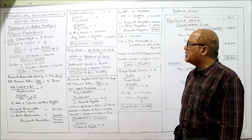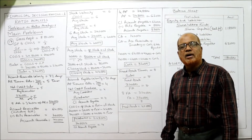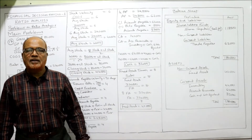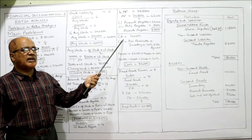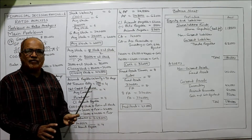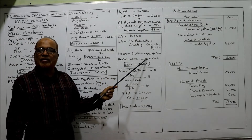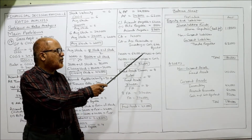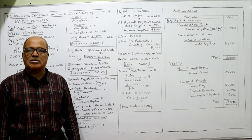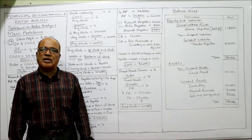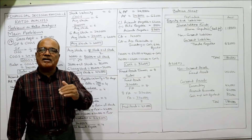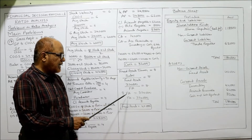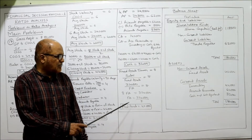Current assets are given as ₹1,40,000, which consists of inventory, account receivable, and cash. So: 1,40,000 = 44,000 (inventory) + 64,000 (AR) + cash. Therefore cash = 1,40,000 − 64,000 − 44,000 = ₹32,000. For fixed assets turnover ratio of 8 times: sales/FA = 8, so 3,20,000/FA = 8, giving fixed assets = ₹40,000.